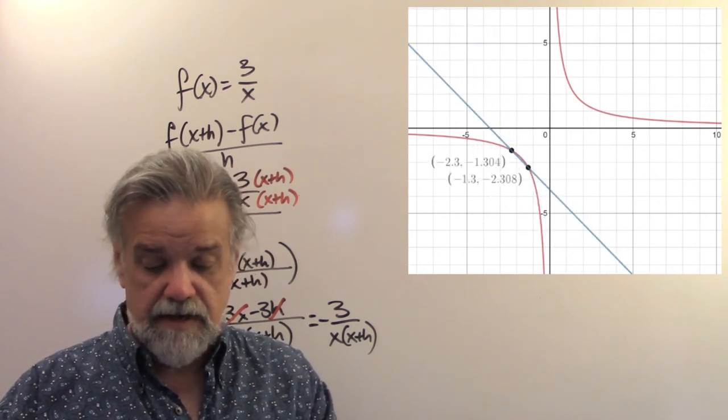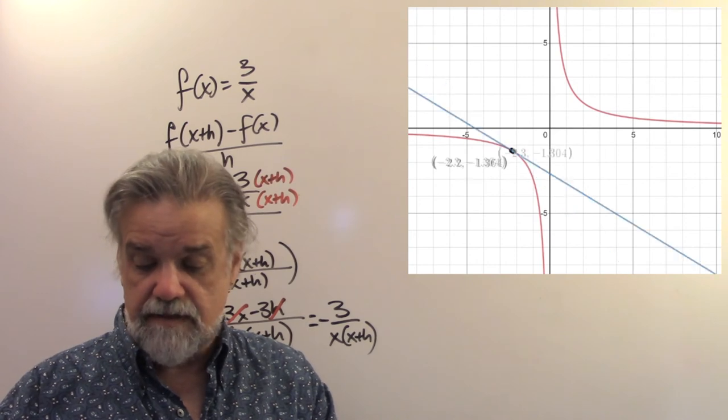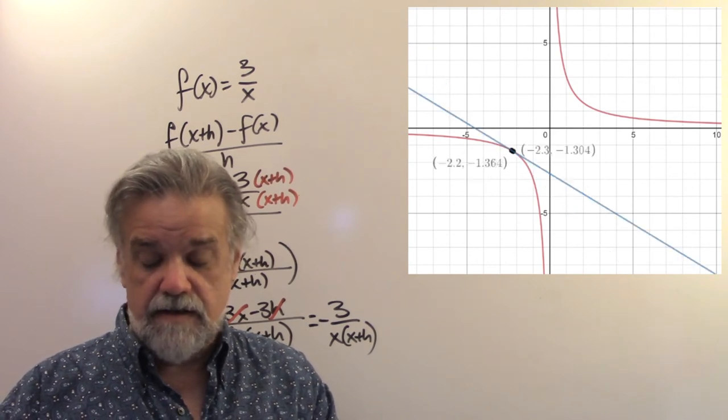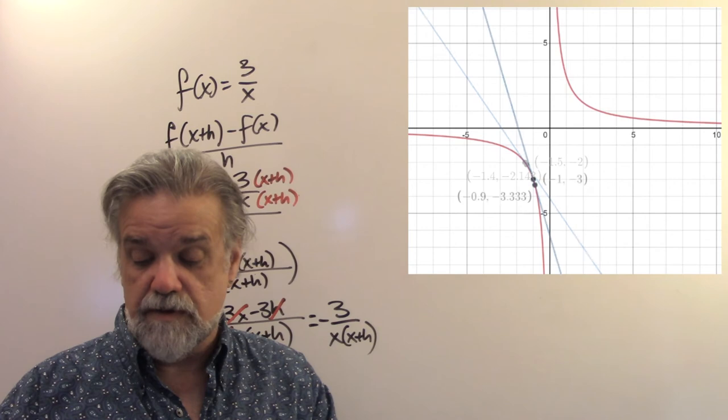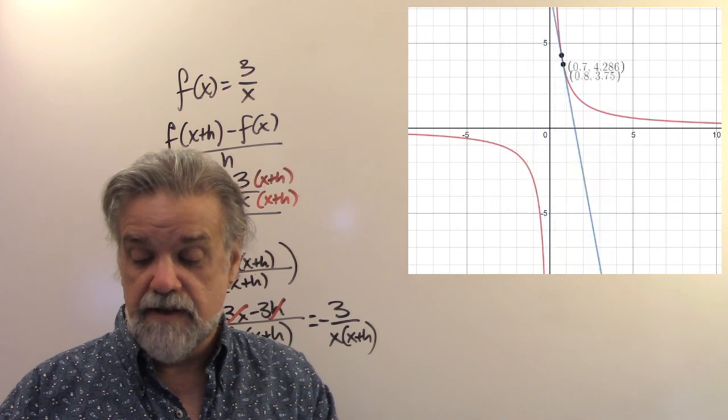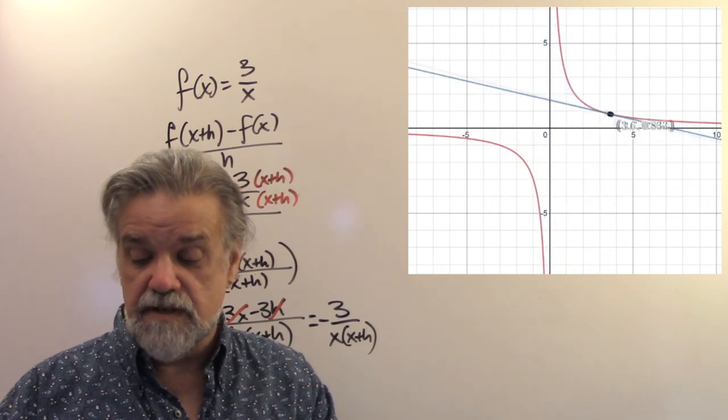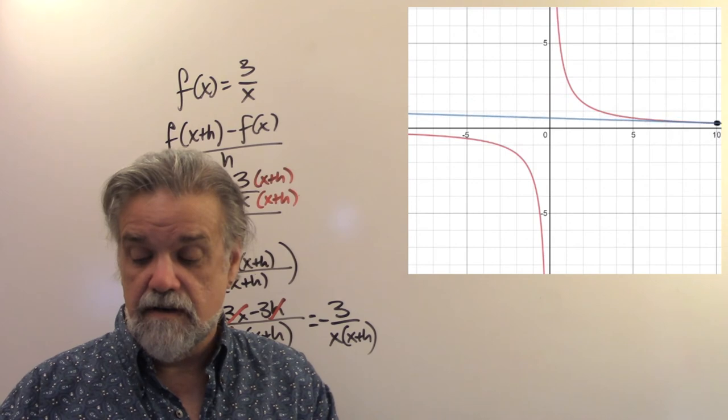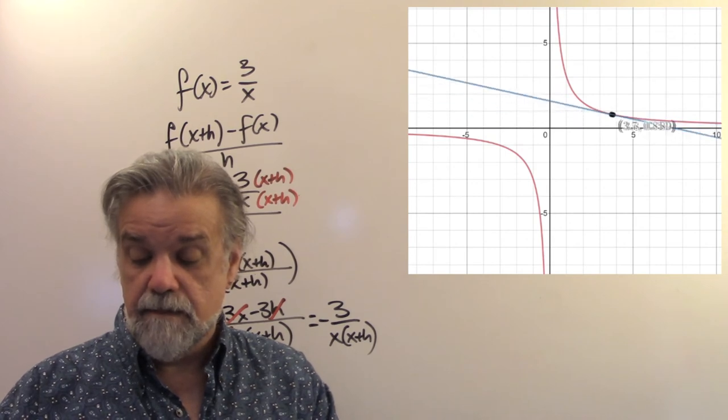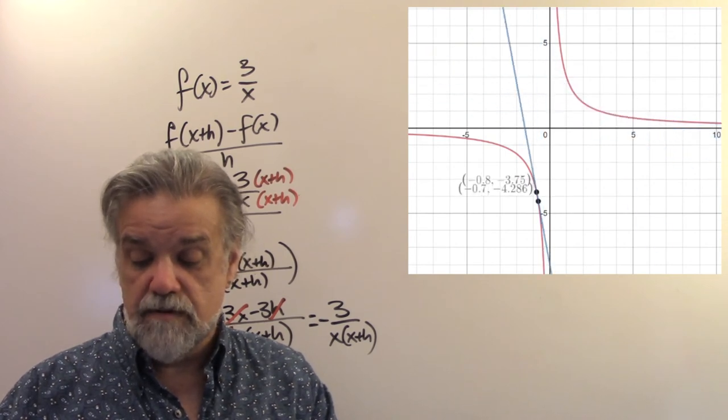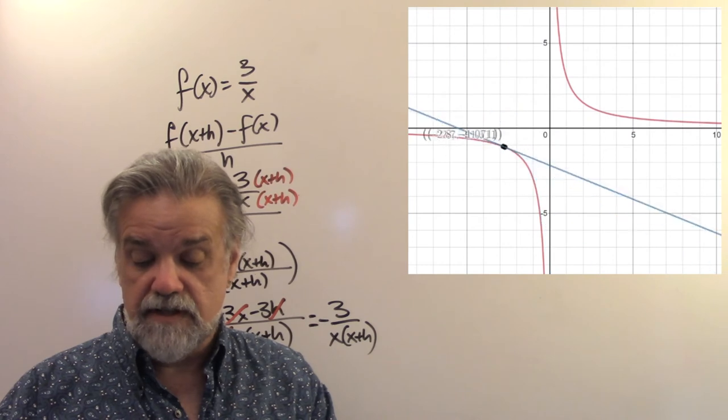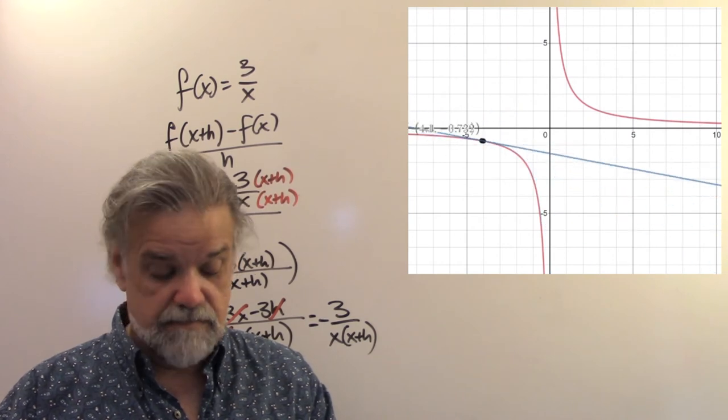And if I make h smaller like that, then it gets closer and closer to what might be a tangent line. And again, the difference quotient is telling you what the slope of this line is.